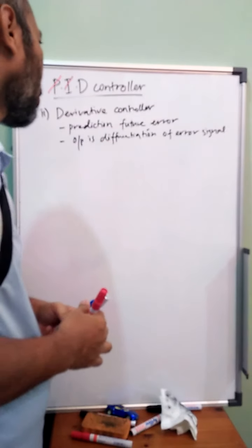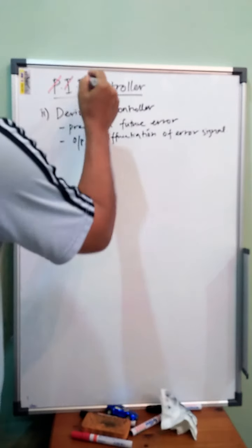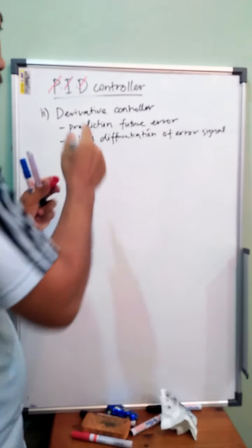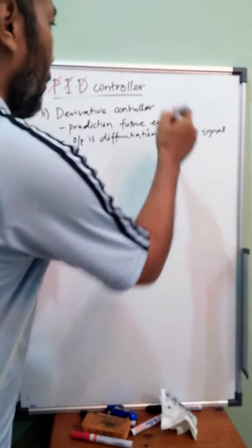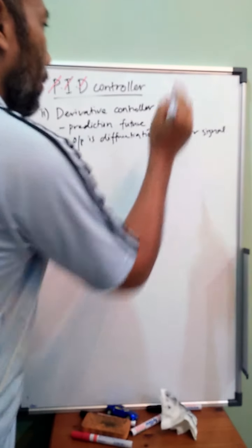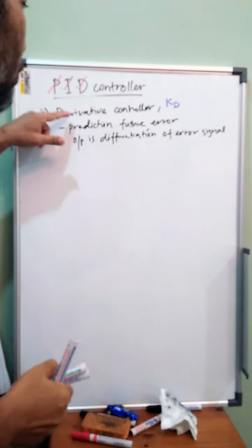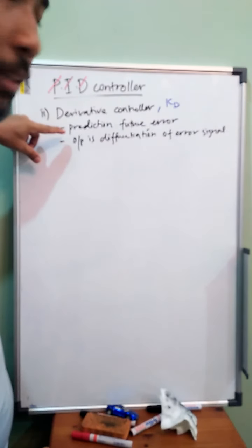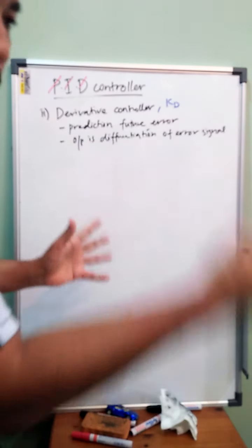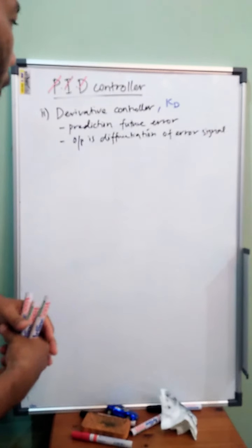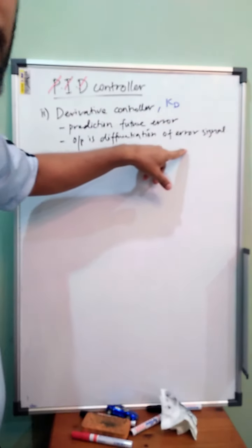Okay, the third controller part is derivative controller. In derivative controller, the constant is the derivative controller constant. In this controller, they use the prediction technique, prediction of the future error based on the previous error.